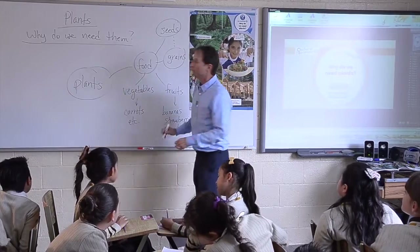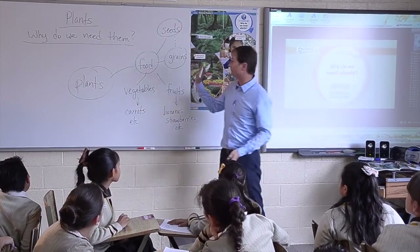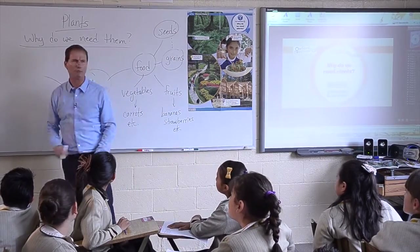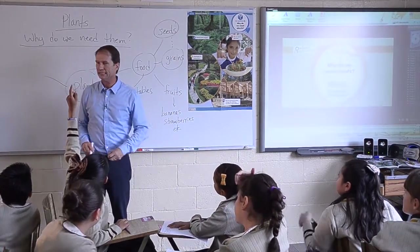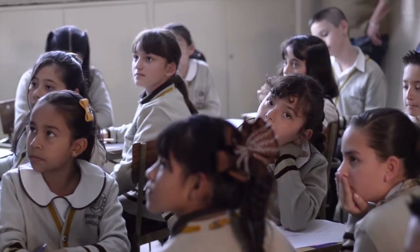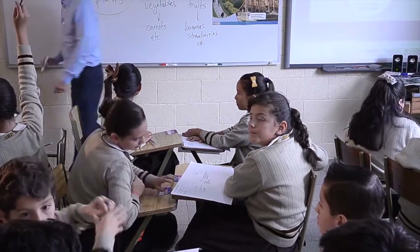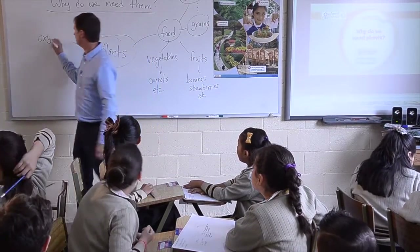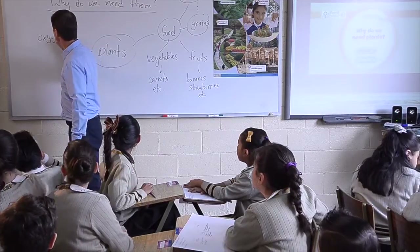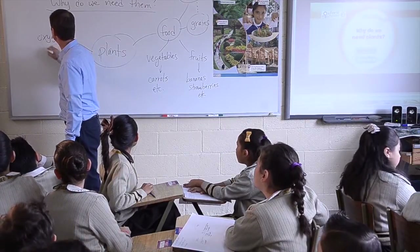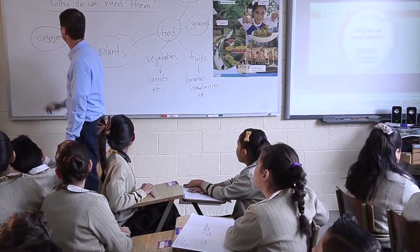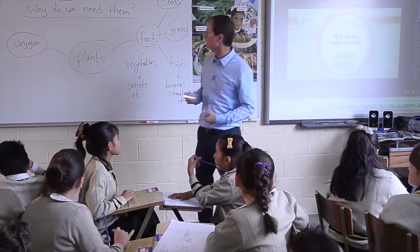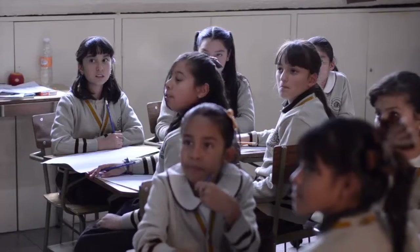Any other way that plants are important? They give us oxygen. How do you spell oxygen? O-X-Y-G-E-N. Wonderful — oxygen. We need oxygen to breathe. What else do plants give us?